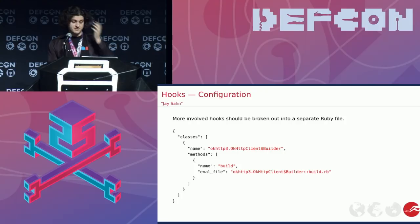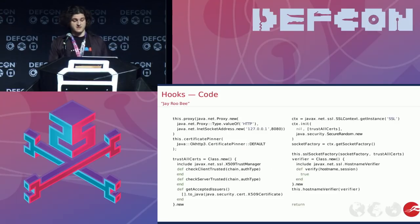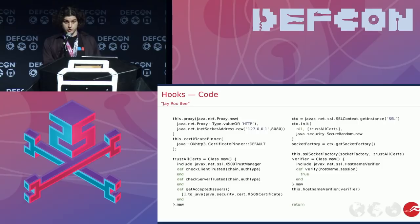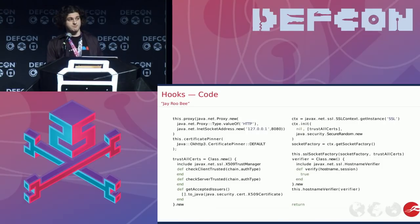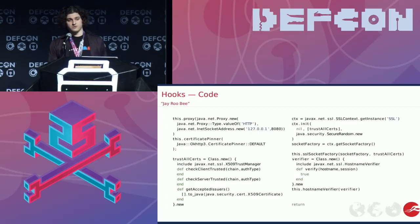For anything more involved, you'll use something like a file that you can also edit through the web interface. This example disables cert validation, cert pinning, and also hard-codes my HTTP proxy so all the requests made using OkHttp go through my proxy, even though normally they ignore the system proxy setting and the WiFi setting.